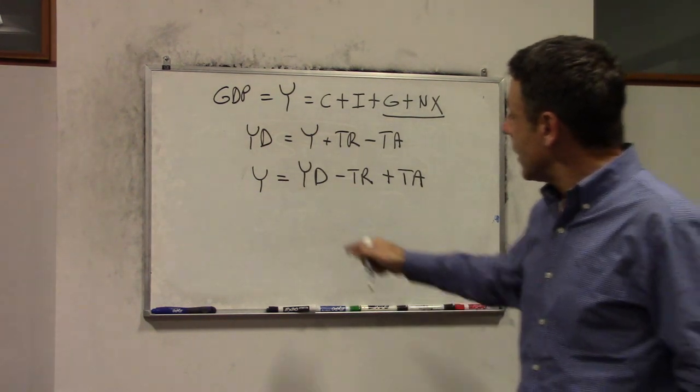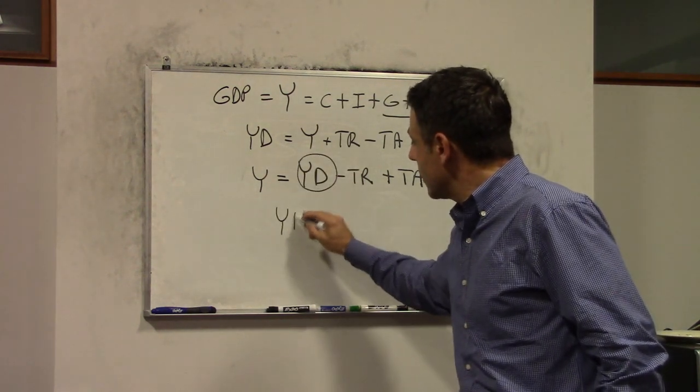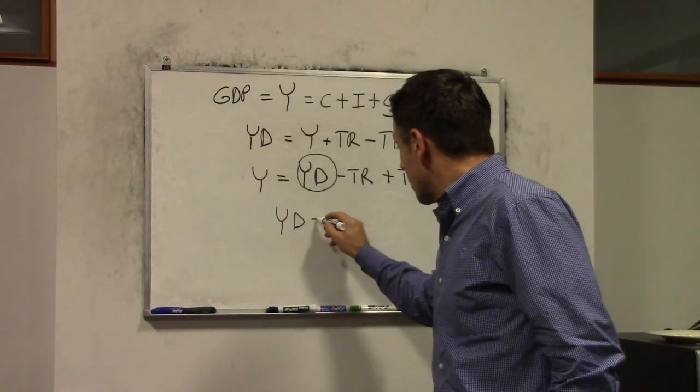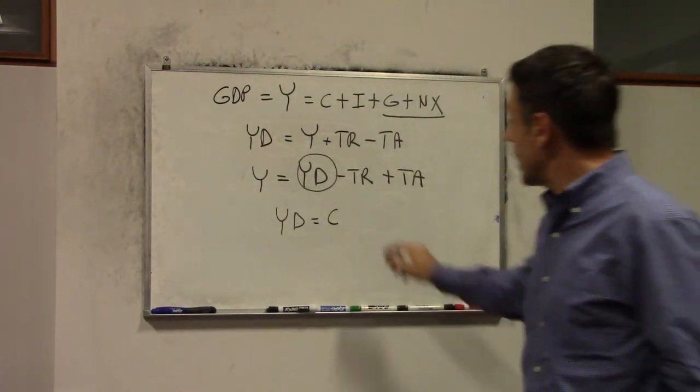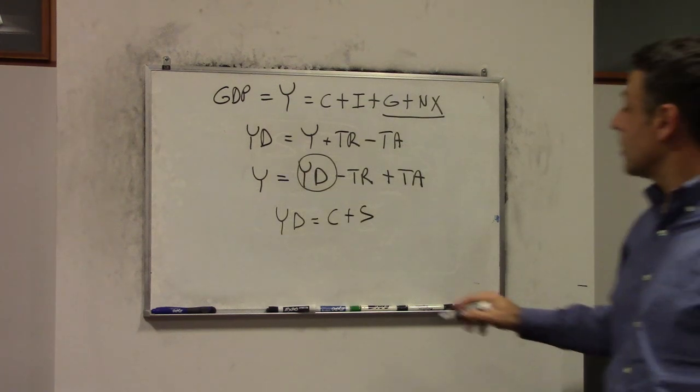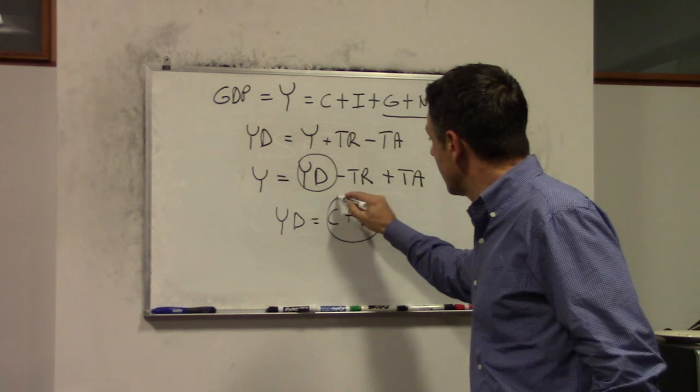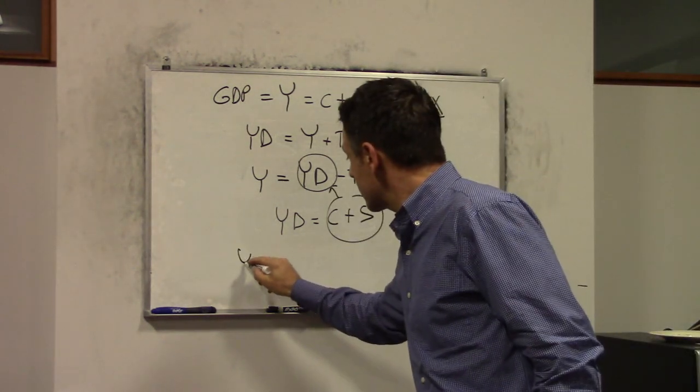We know that there are only two things that we can do with disposable income. We can either consume it or we can save it. Now, if we substitute C plus S into here, we will obtain the following expression.